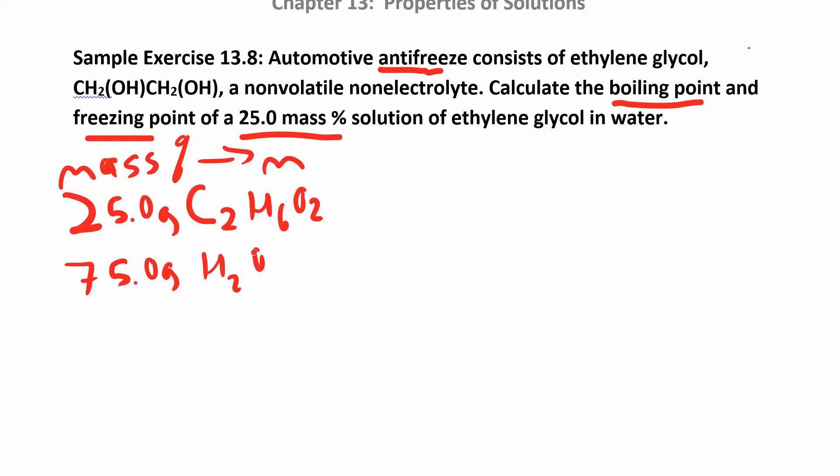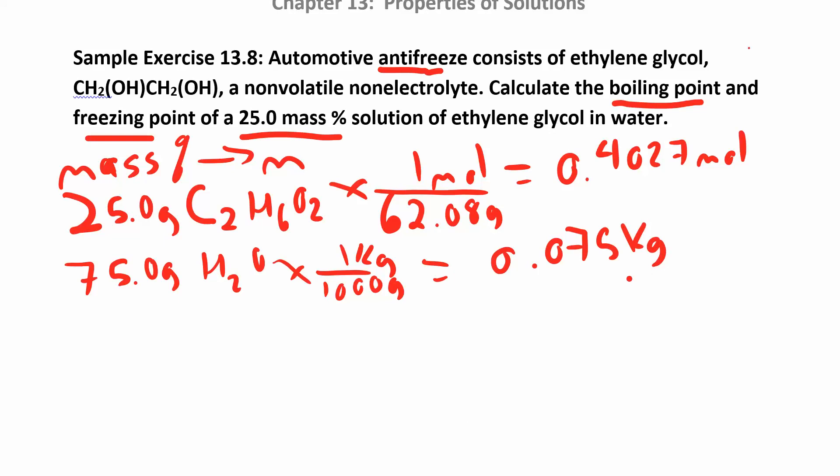Now what I want to do is take the mass percent and convert to molality. That means I want my solute. I need the moles of my solute. So I need to find the molar mass. It's about 62.08 grams for one mole. When you work all that out, you get the moles of the solute, 0.4027 moles. For the water, we want to convert that to kilograms. There are 1000 grams in one kilogram. You're just moving the decimal place over. So I have 0.075 kilograms. To find the molality now, molality is just the moles of the solute, 0.4027 moles, divided by the kilograms of the solvent, 0.075 kilograms. For the molality, you get 5.37 molal.